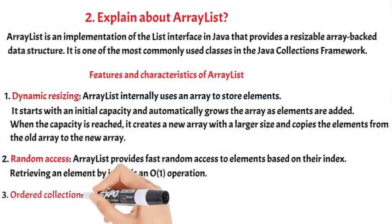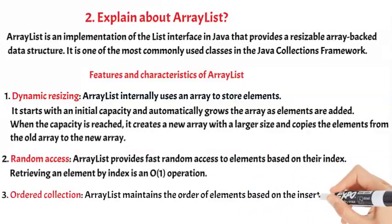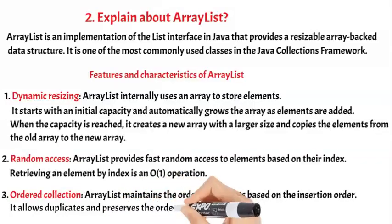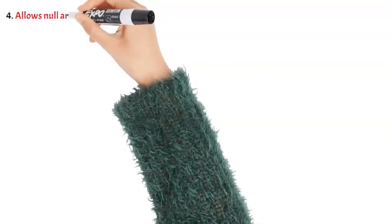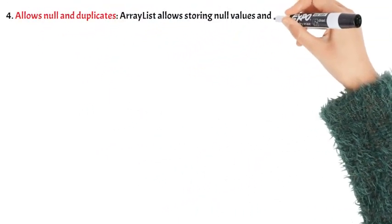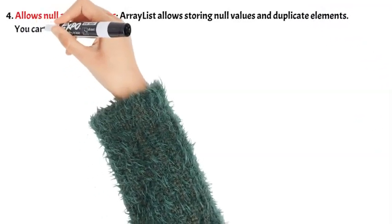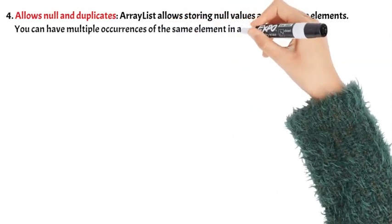Key feature 3: Ordered Collection — ArrayList maintains the order of elements based on insertion order. It allows duplicates and preserves the order in which elements were added. Key feature 4: Allows Null and Duplicates — ArrayList allows storing null values and duplicate elements. You can have multiple occurrences of the same element in an ArrayList.